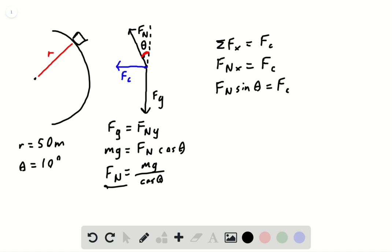We can put FN here, like I mentioned before, to give us mg over cosine theta times sine theta will be equal to mv squared over r. Now solving for v, we get square root of g r times sine theta divided by cosine theta.